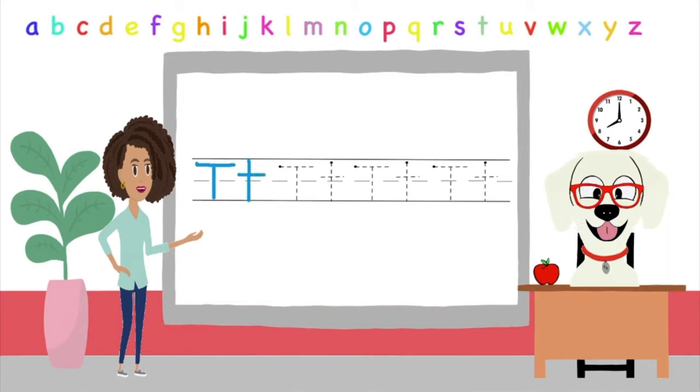Let's do it again. Start at the top and make a straight line down to the bottom, then go back to the top and make a line across. Now the lowercase T, start at the top and make a line to the bottom and go to the middle and make a line across.